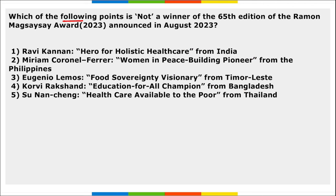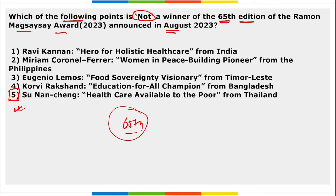The first question is: which of the following is not a winner of the 65th edition of the Ramon Magsaysay Award announced in August 2023? All of them are winners except option 5. The winners are Ravi Kanan, Miriam, Cornel Ferrer, Eugenio Lamos, and Corey V. Rakshant. Mark this.